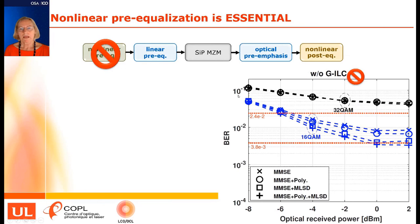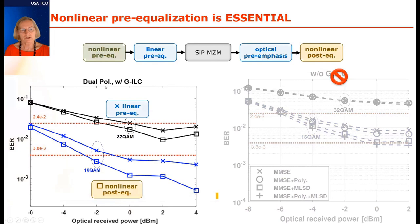Without the nonlinear pre-equalization, 32-QAM and 16-QAM were not reliably coming below the forward error correction thresholds of 7% and 20% overhead. When we apply the nonlinear pre-equalization, we see a significant improvement: using linear compensation techniques we can get below the FEC thresholds, and adding nonlinear post-equalization gives good margin below those thresholds.